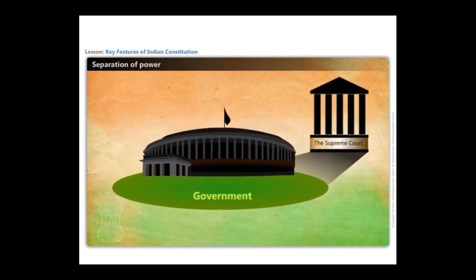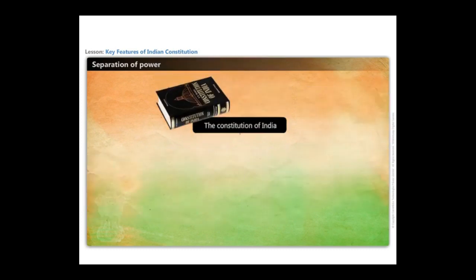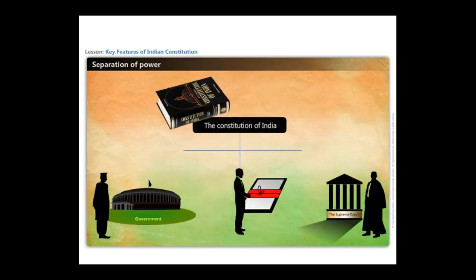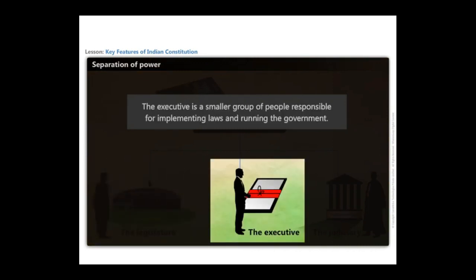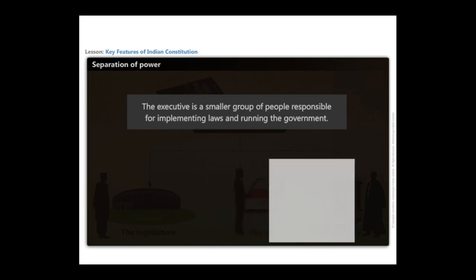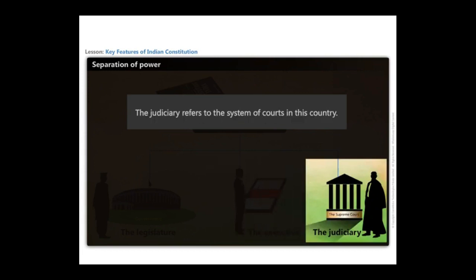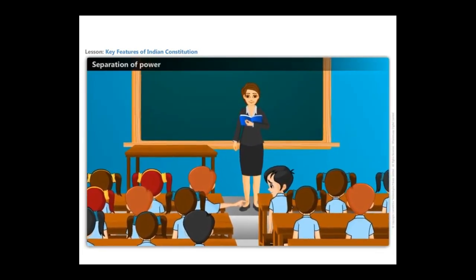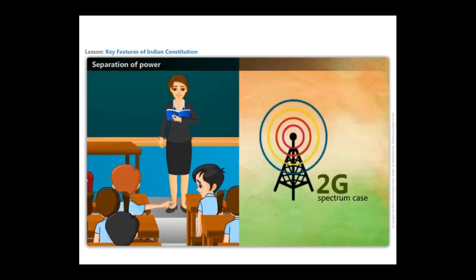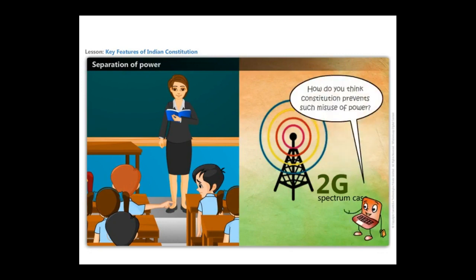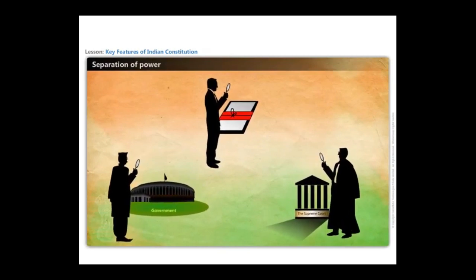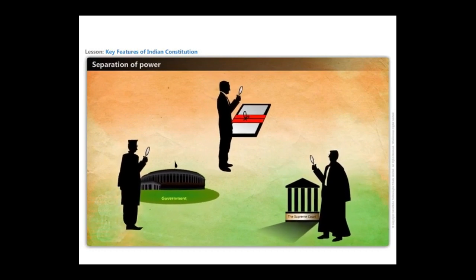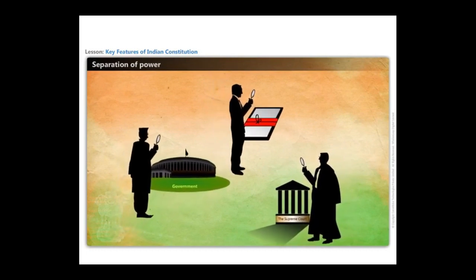Thus, a decision taken by the legislature was overruled by the judiciary to protect national interests. According to our constitution, there are three organs of the state: the legislature, the executive, and the judiciary. The legislature refers to our elected representatives. The executive is a smaller group of people responsible for implementing laws and running the government. The judiciary refers to the system of courts in the country. The constitution says that each of these organs should exercise different powers, and each organ acts as a check on the other organs of the state, ensuring the balance of power between the three.